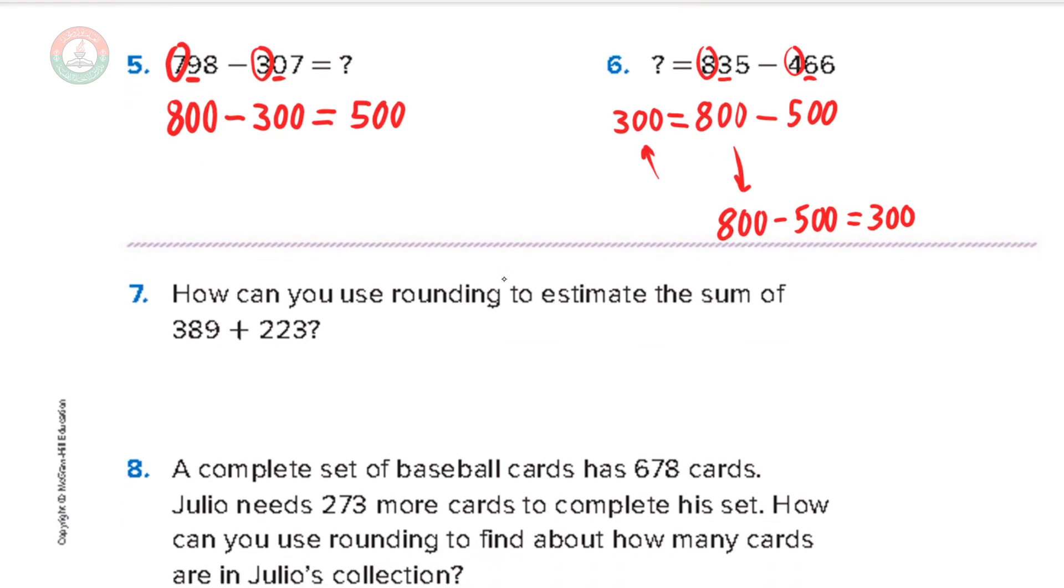How can you use rounding to estimate the sum of 389 plus 223? So here, I'm forced to use rounding, which is fine. So in the question here, it says round, so I must round. So I can round here to the tens or the hundreds, but rounding to the hundreds is super easy. So I'll round to the hundreds.